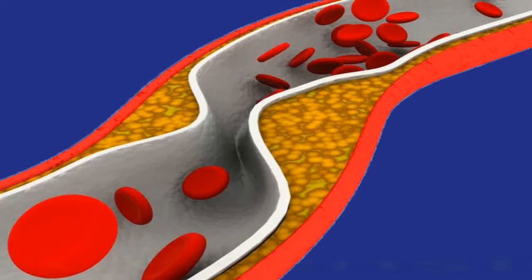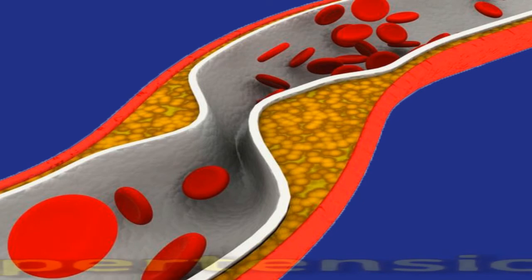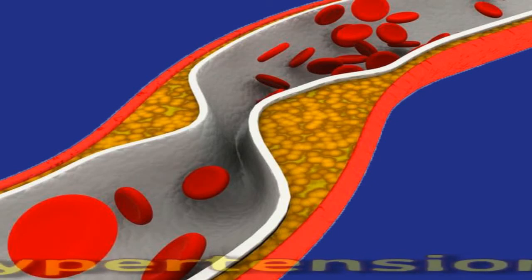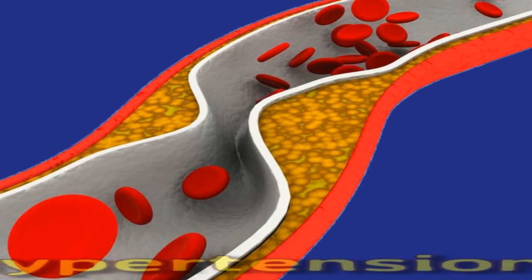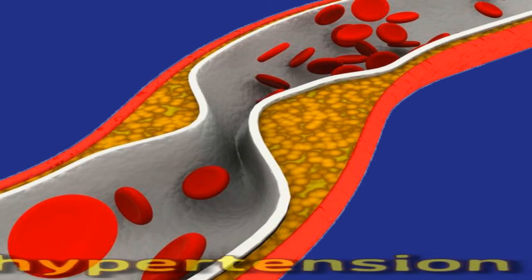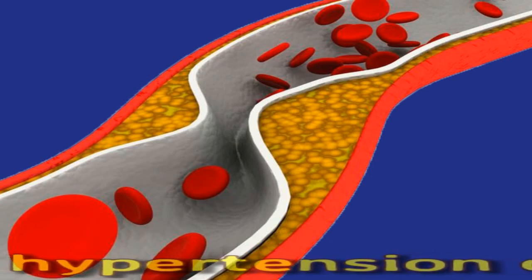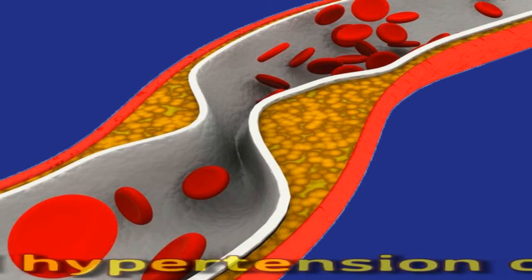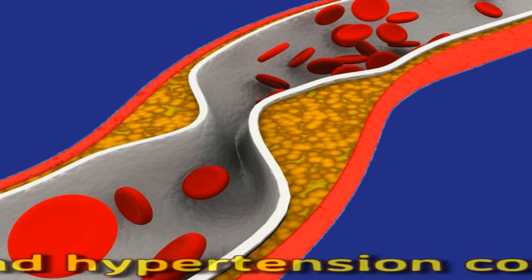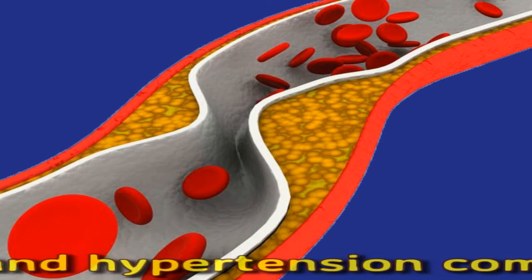The combined impact of diabetes and high blood pressure can increase the risk of cardiovascular disease, kidney disease, and other health issues. Without treatment, diabetes and high blood pressure may lead to serious complications such as eye problems, kidney failure, heart attack, and stroke. Managing blood sugar levels and blood pressure can help prevent these complications.